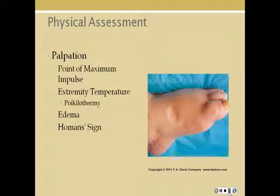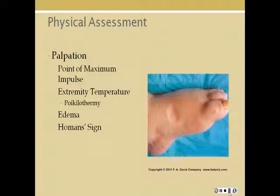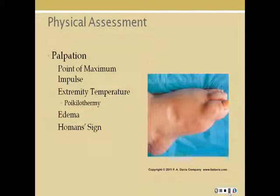For palpation, the Point of Maximum Impulse (PMI) is the apex of the heart, located in the fifth intercostal space at the intersection with the left midclavicular line. You may be able to palpate this thrust felt when the ventricle contracts, though not on all patients. Also check extremity temperature — are they poikilothermic or room temperature? Check for edema or a positive Homan's sign, which is calf pain when the foot is dorsiflexed.